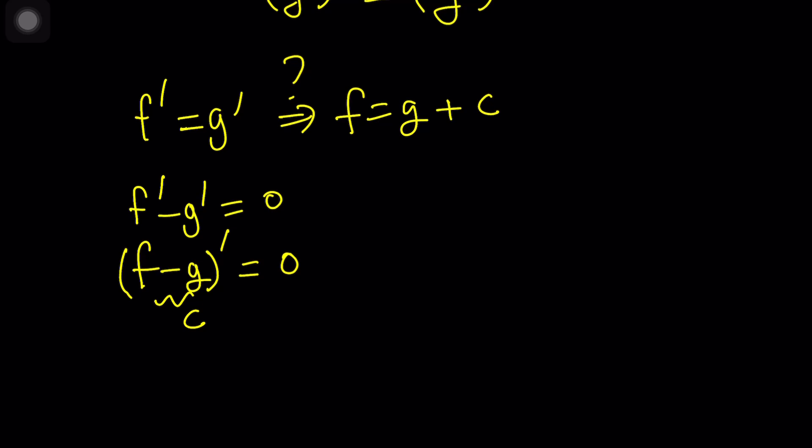What function differentiated gives you zero? If you said a constant, you're right about it, because derivative is the rate of change of a function, and constants do not change or vary like variables. So f minus g must be a constant, which means f can be written as g plus a constant. In other words, two functions that differ by a constant, when differentiated, gives us the same thing.